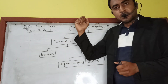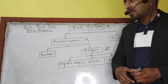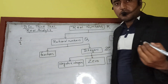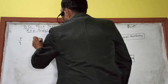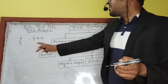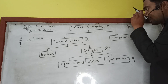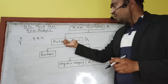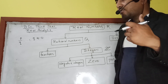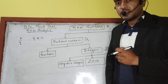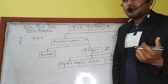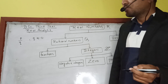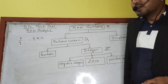Irrational numbers are those that are neither terminating nor recurring in decimal form. For example, 5/2 = 2.5 is terminating, so it is rational. 10/3 = 3.3333... is recurring, so it is also rational. Such terminating or recurring decimals are rational numbers, denoted by Q.